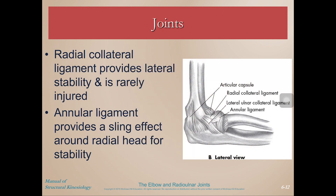The radial collateral ligament is rarely injured — it provides lateral stability, though perhaps a tennis player relying on a backhand might damage it. We also have the annular ligament, which provides a sling-like effect around the radial head for stability.